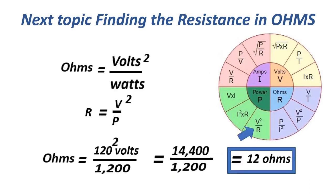The next formula for resistance in ohms: ohms equals volts squared over watts, or R equals V squared over P. That equals 120 squared over 1,200, which is 14,400 divided by 1,200, equals 12 ohms.